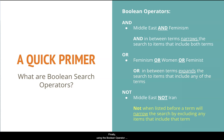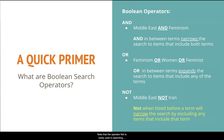Finally, using the Boolean operator NOT before a term will tell the database not to include any items in the search results that include that term. This is great for searches where the term may be strongly associated with more than one concept but only one concept is relevant to the search. Note that the operator NOT is rarely used in searching because it can eliminate relevant results if not used carefully.